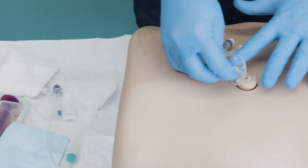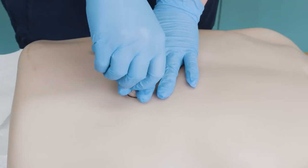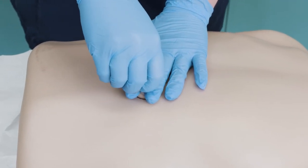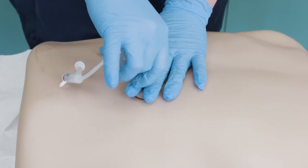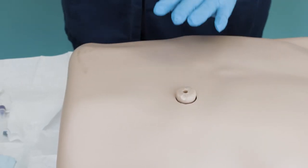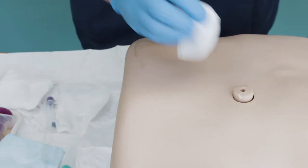Remove the old tube by using one hand to press gently downwards on the abdomen around the tube and the other to gently pull the tube. Clean the skin around the stoma to remove excess fluid or blood and dry thoroughly.